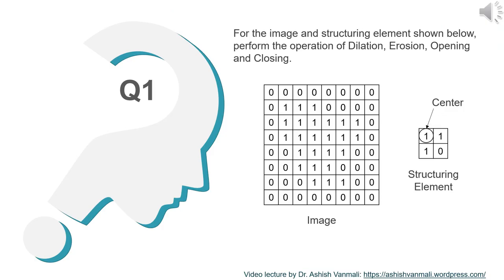Let's look at the first question. The question is: for the image and the structuring element shown below, perform the operation of dilation, erosion, opening and closing. There is an image and the structuring element provided.